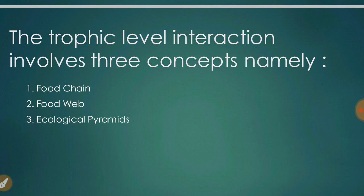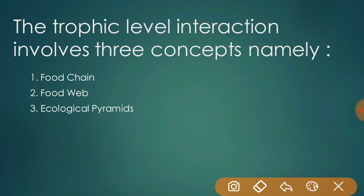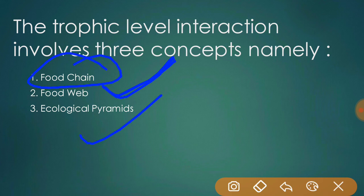There are three concepts involved in trophic level interaction. First is food chain — organisms in an ecosystem are related to each other through feeding mechanisms or trophic levels, where one organism becomes food for another. Second is food web, which is the combination of many food chains. Third is ecological pyramids, of which there are different types.